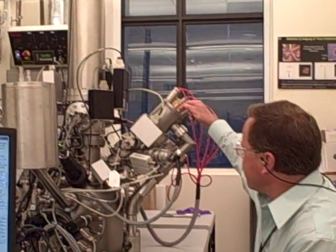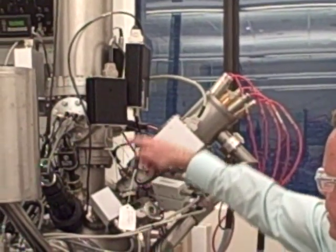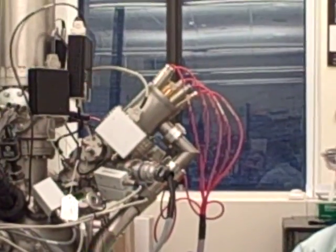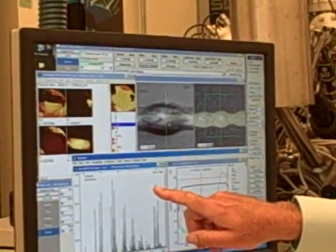With TOF-SIMS we interrogate the composition of the sample. We have a pulsed ion beam which strikes the sample. The surface species are ejected and then detected. All of our analysis starts with spectral information, what's present.